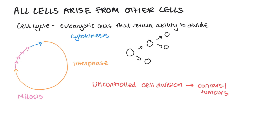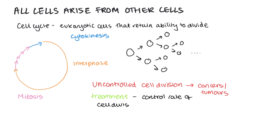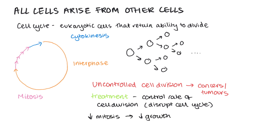We can sometimes treat these by controlling the rate of cell division by disrupting the cell cycle. If we disrupt the cell cycle, then cell division and mitosis is going to slow down, and therefore tumour growth is going to slow. We can use our knowledge of the cell cycle and mitosis to work out how we could do this. Firstly, we could prevent DNA replication during interphase, which would prevent or slow down mitosis because there wouldn't be two sister chromatids joined by a centromere, so they wouldn't be able to be pulled apart.